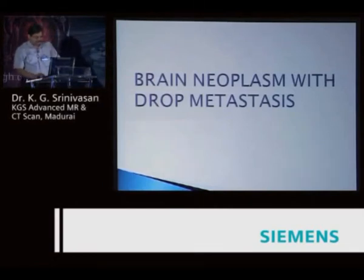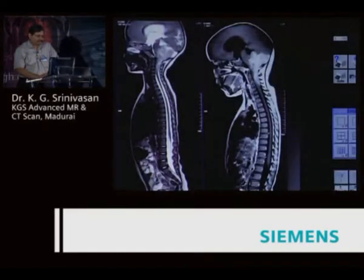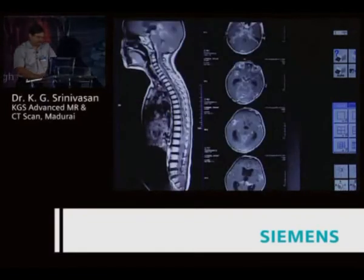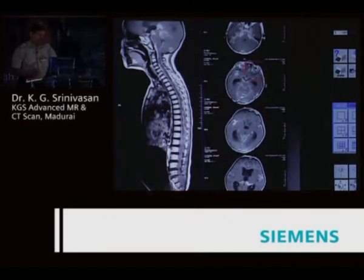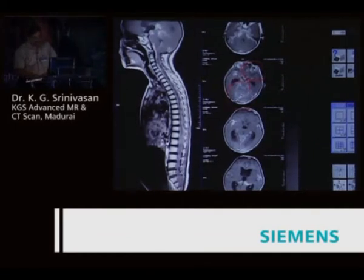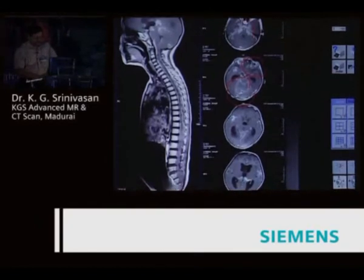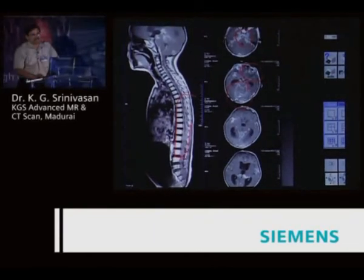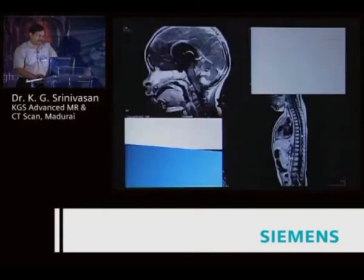Brain neoplasms with drop metastasis: this is a very typical case of malignant ependymoma. You can see the malignant ependymoma with drop metastasis over the spinal cord, cauda equina, and nerve roots. Also a proven case of retinoblastoma with enucleation done, presenting with multiple cranial nerve palsies, cerebellar symptoms, and progressive weakness — extensive CSF seeding in the cerebellum, basal cranial nerves, and entire spinal subarachnoid space.